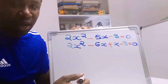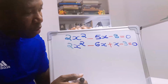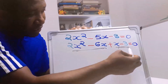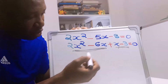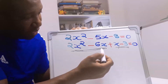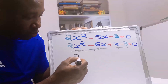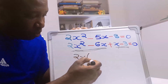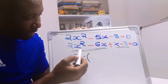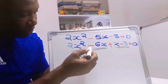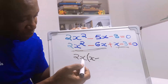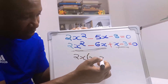Now we have four terms and we can apply the factor method. We are going to pair the terms. In the first two terms, we consider what is common to 2x squared and 6x — it is 2x. We open a bracket: 2x multiplied by x gives 2x squared, and 2x multiplied by 3 gives 6x. So the first factor is 2x(x minus 3).